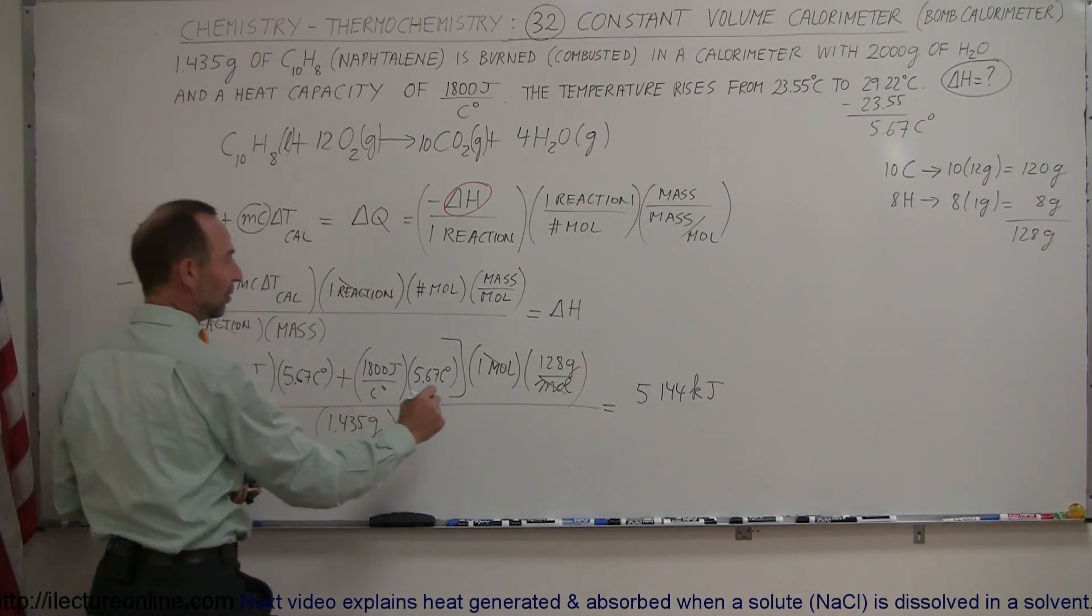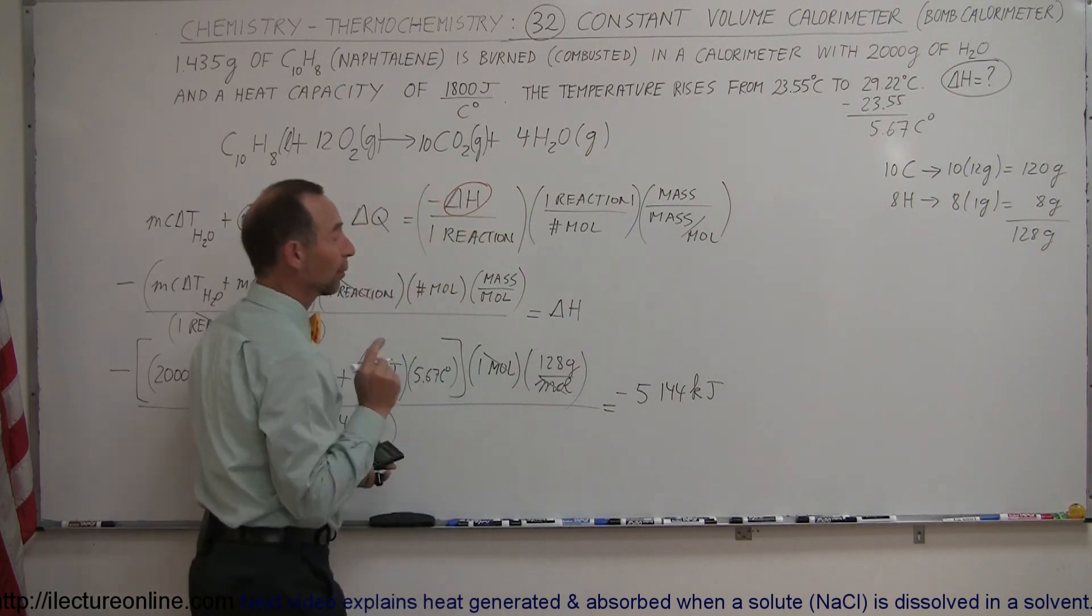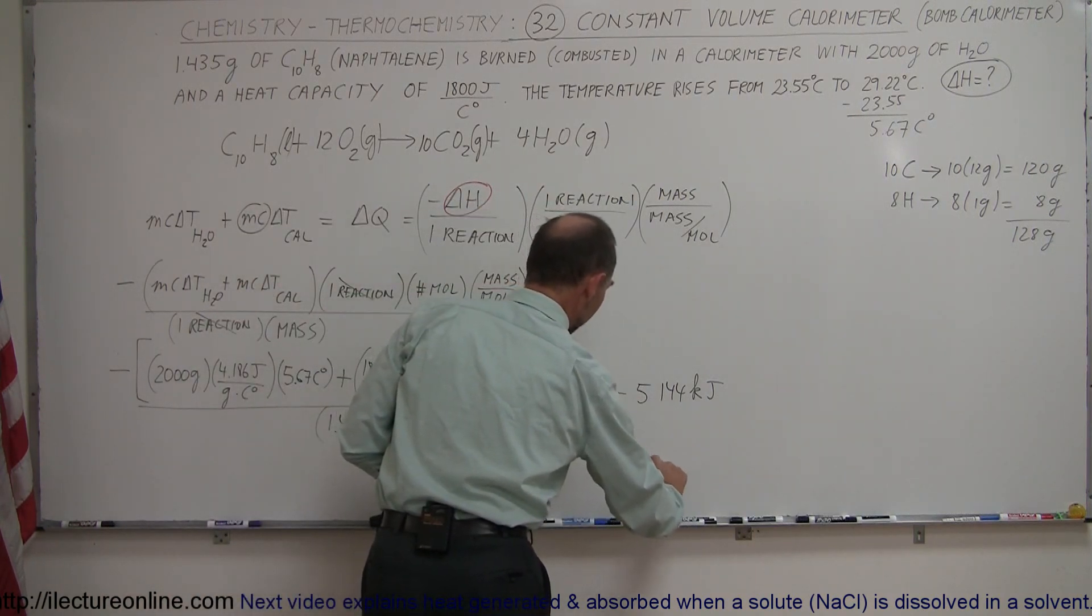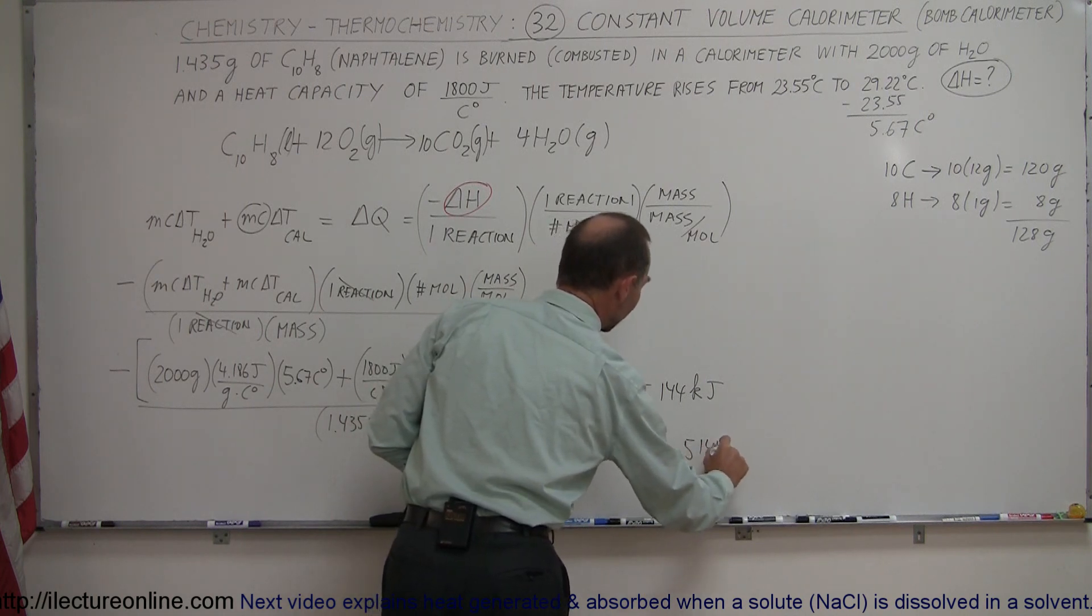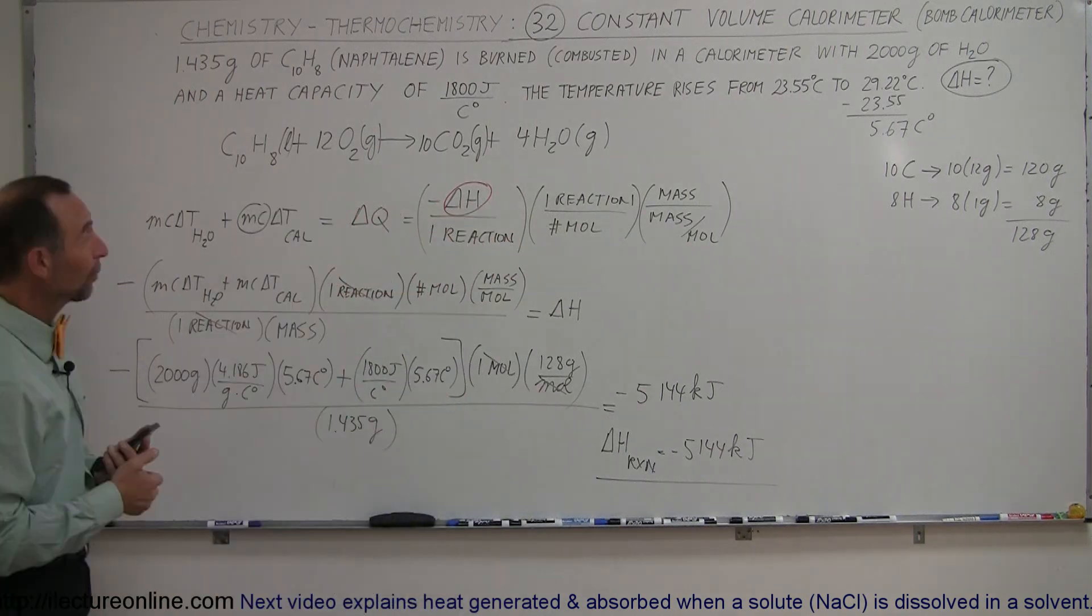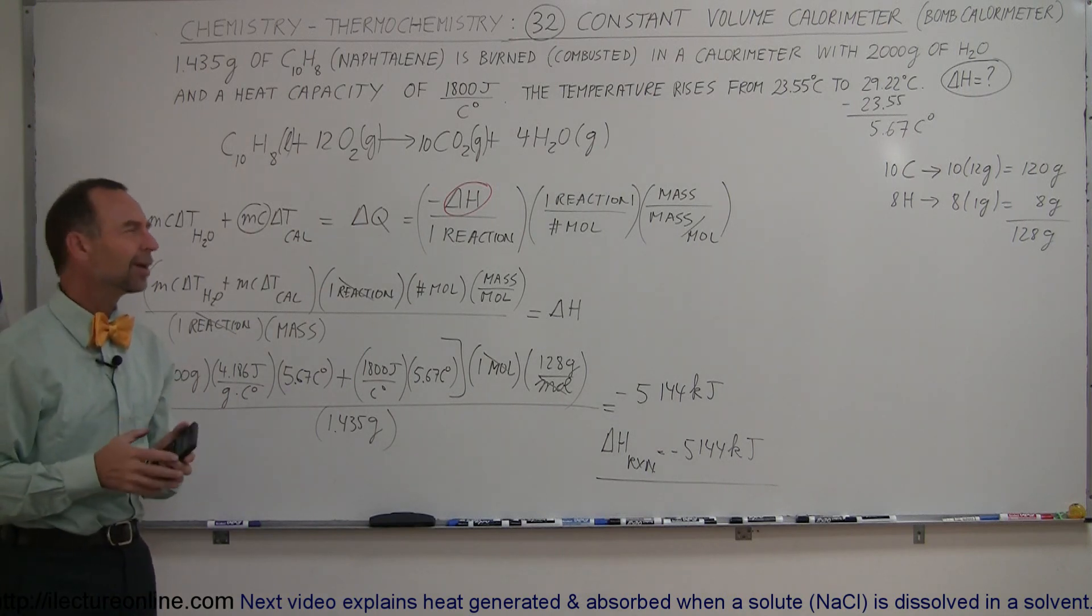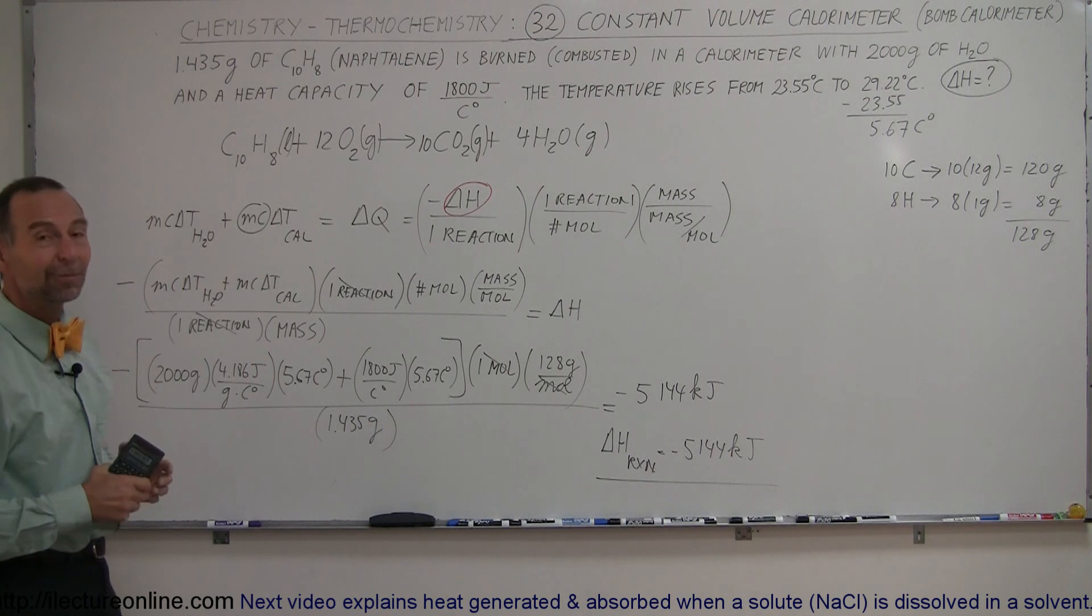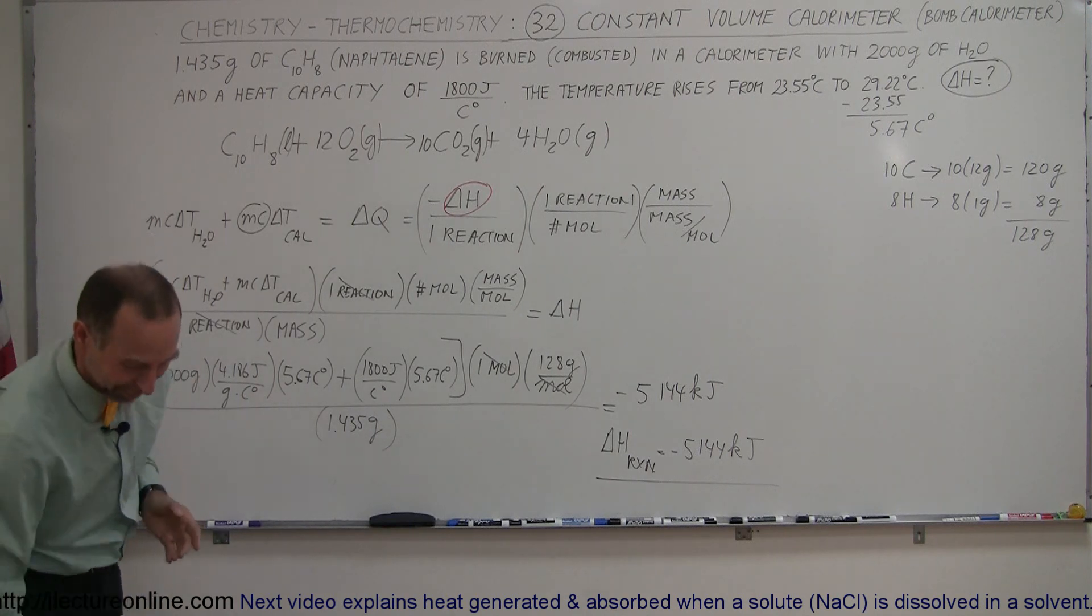This minus goes here, which means we have a minus there, which means that the delta H of this reaction is equal to minus 5,144 kilojoules, and that's a lot of energy. We get a lot of energy when we combust naphthalene, which is a good thing because when we put gasoline in the car, we want to have all that power, all that energy from that chemical reaction. And that's how you do that problem.